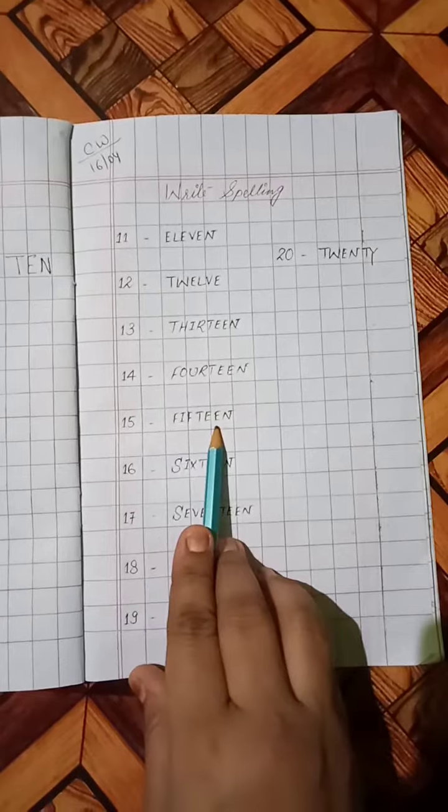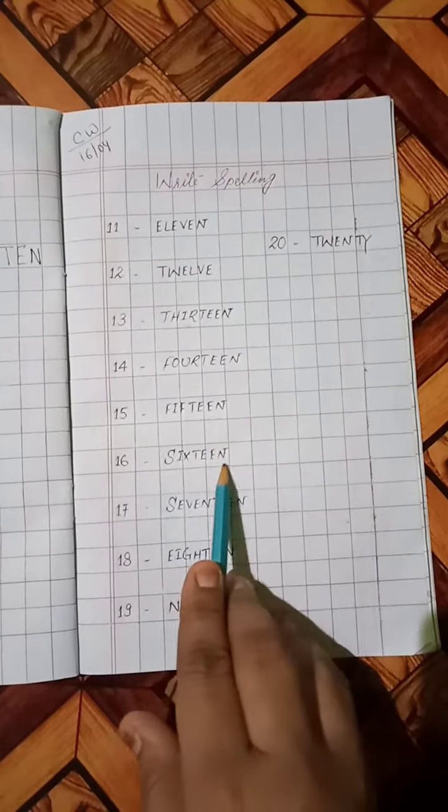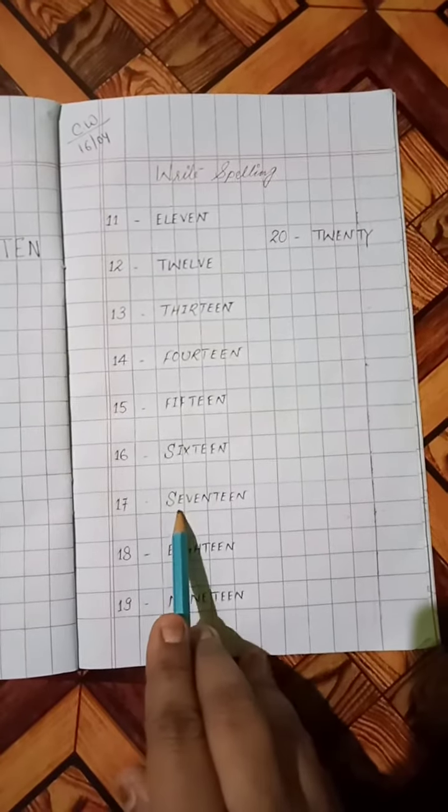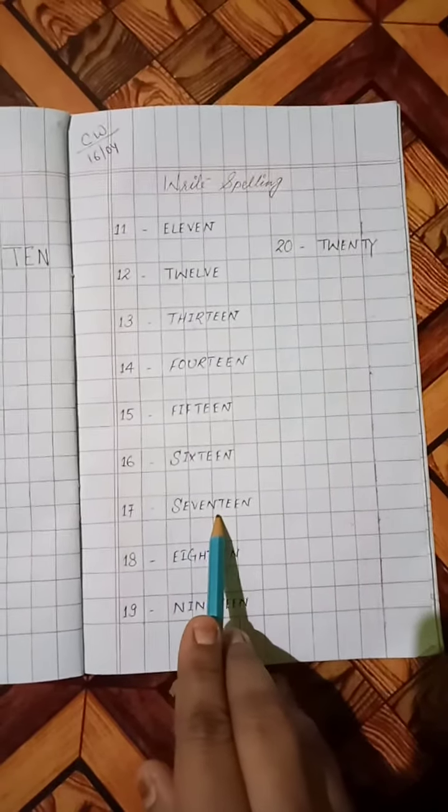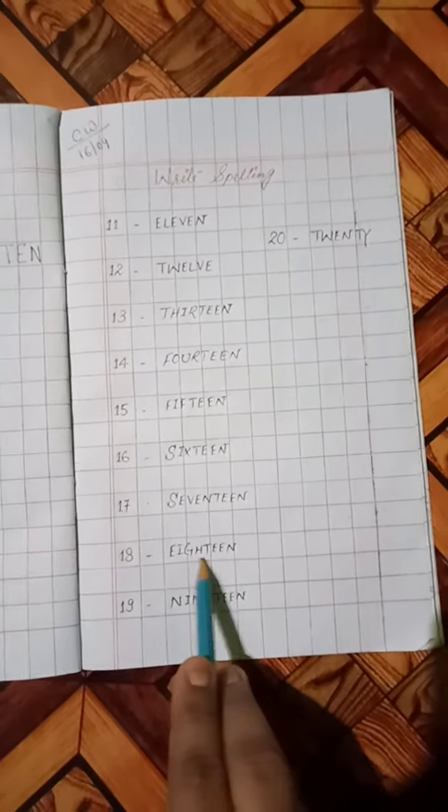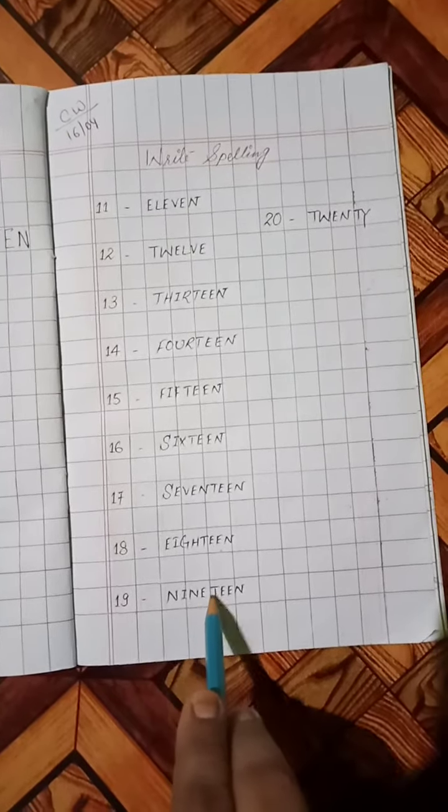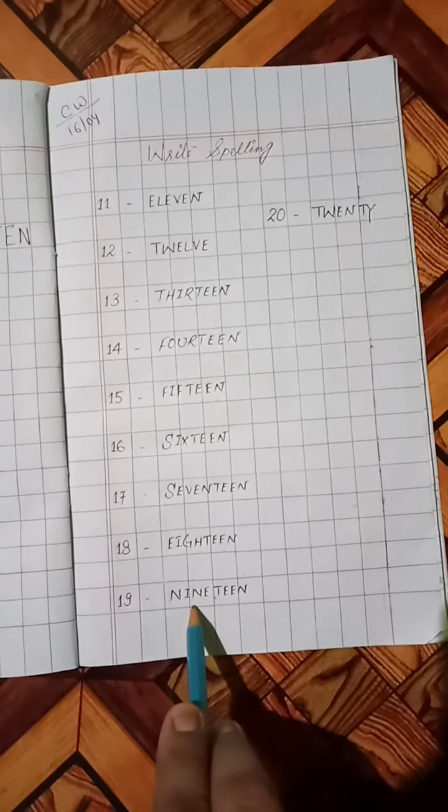S-I-X-T-E-E-N, 16. S-E-V-E-N-T-E-E-N, 17. E-I-G-H-T-E-E-N, 18. N-I-N-E-T-E-E-N, 19.